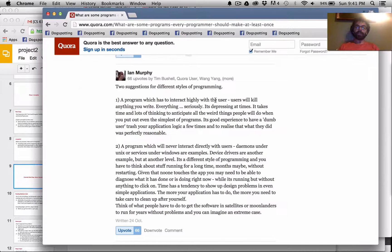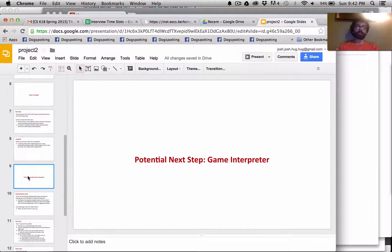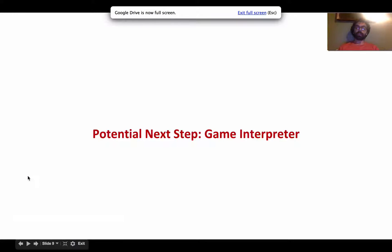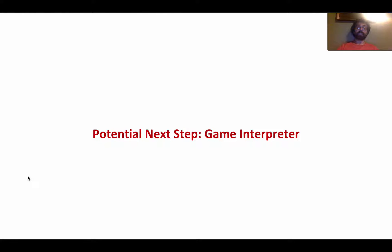Well, there was this really neat Quora post that I liked, which was, what are some programs every programmer should make at least once? And I really like this answer. A program which has to interact highly with the user. Users will kill anything you write, everything, seriously. So, very true. So, what we do is give you a picture of what it looks like to build a big scalable, robust skeleton for interaction, and you're filling out some of the details.